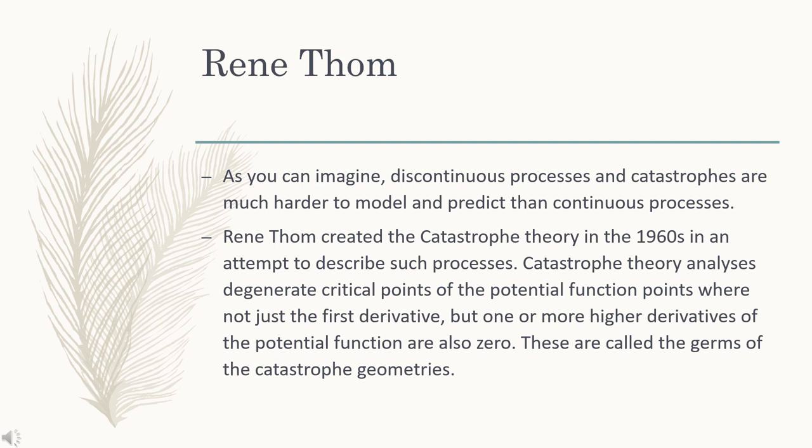Catastrophe theory analyses degenerate critical points of the potential function — points where not just the first derivative, but one or more higher derivatives of the potential function are also zero. These are called the germs of the catastrophe geometries.